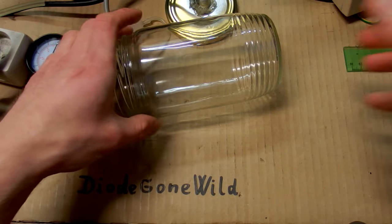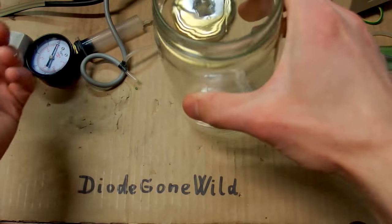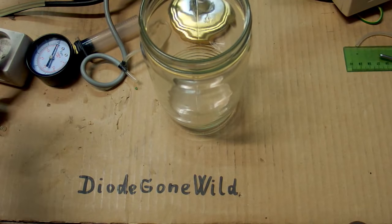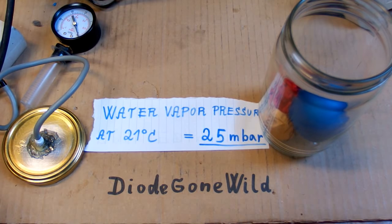But if the implosion happens it's gonna be more violent when the glass is empty. So be careful and use some protective equipment like glasses, gloves, long sleeves and so on. So this is Diode Gone Wild and see you in my next videos.